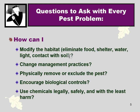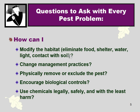In integrated pest management, the landscaper asks themselves: How can I modify the habitat to deter pests? How can I change my management practices to deter pests? What methods can I use to physically remove or exclude the pest in a non-toxic way? How can I encourage biological controls — bringing in or attracting predator insects that eat the pest insect? And how can I use chemicals safely, legally, and with the least harm to any organism, including humans and non-humans?